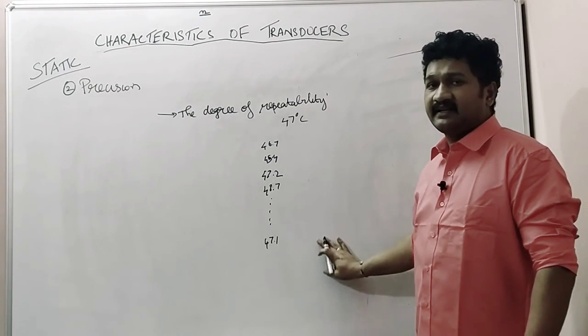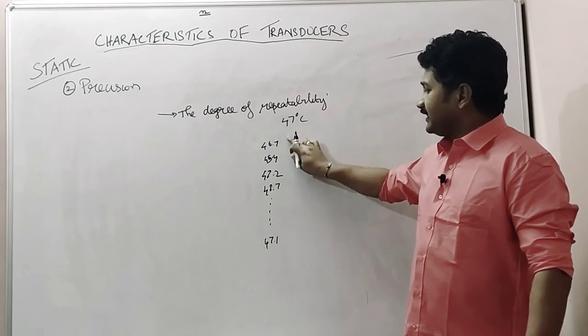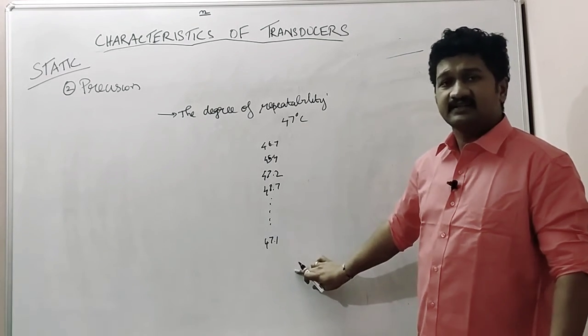The degree of repeatability is how many times, though we measure, the reading should be closer to the true value. That is called precision.